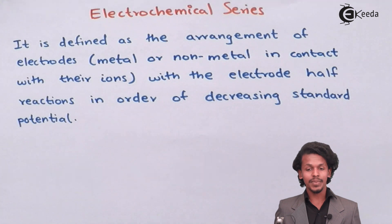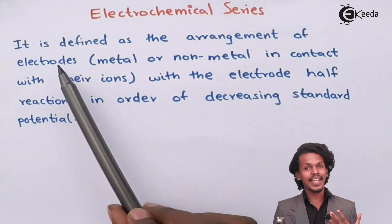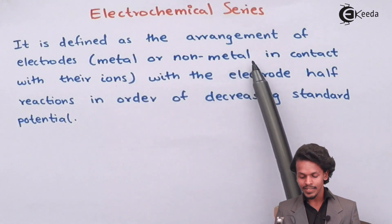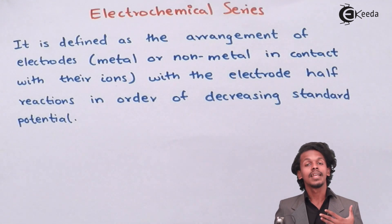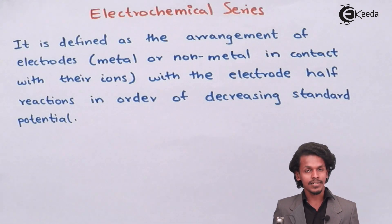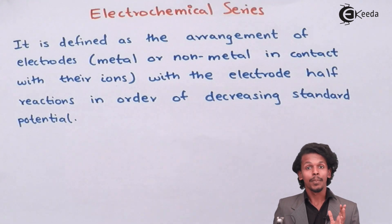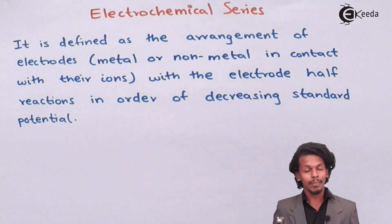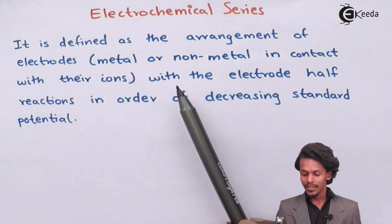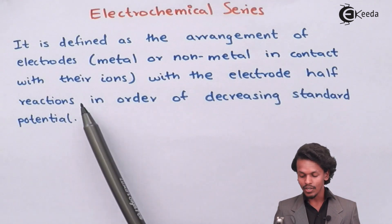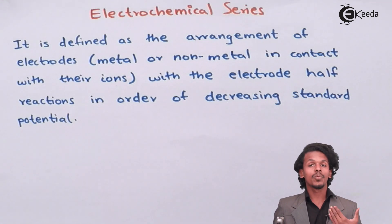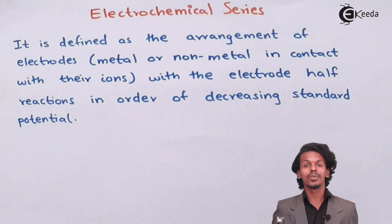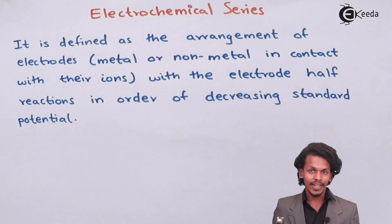The electrochemical series is defined as the arrangement of electrodes — metals or non-metals in contact with their ions — in order of decreasing standard reduction potential. Gases can also serve as electrodes provided they are attached to inert electrodes like platinum. This arrangement helps us predict which electrode will undergo oxidation or reduction more easily.